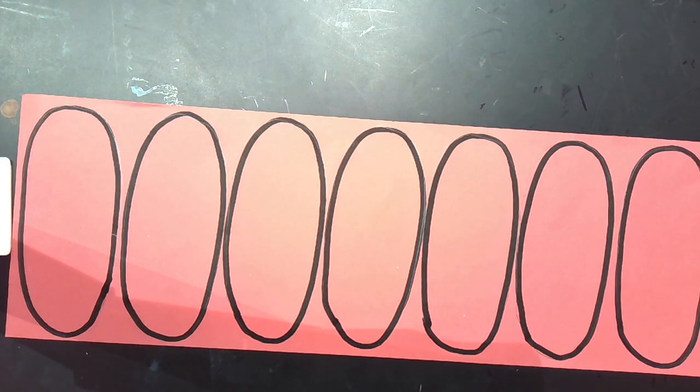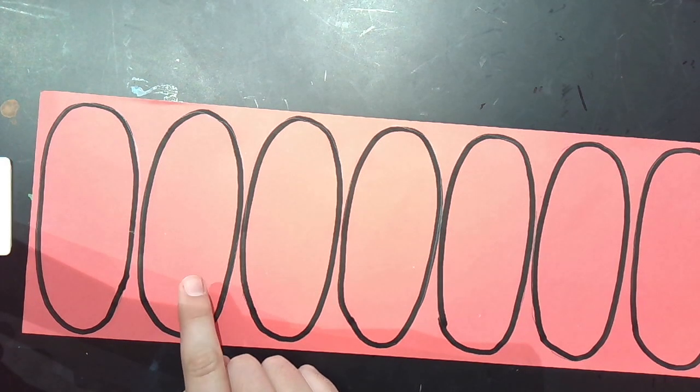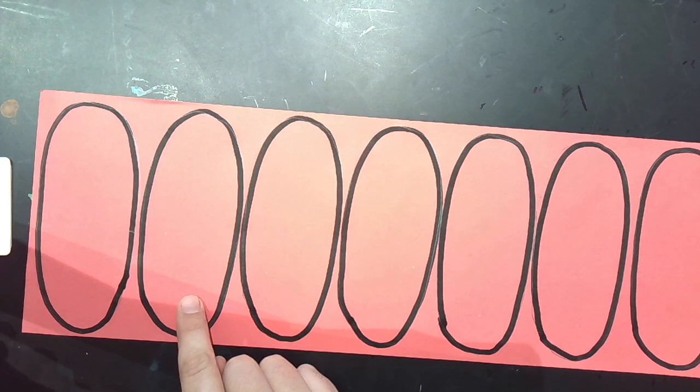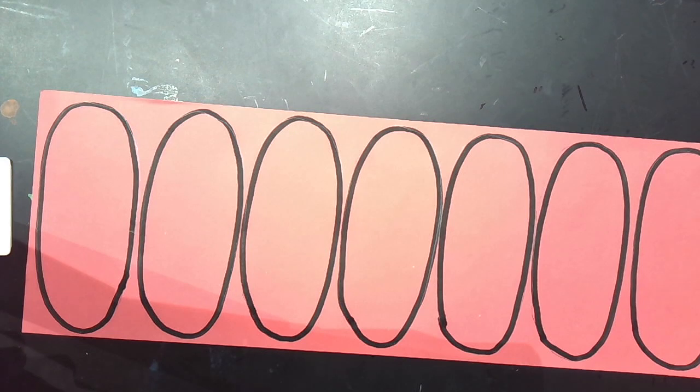So I used my black marker to do my tracing. You may have used a crayon, whatever works. And now what you're going to do is you're going to find a crayon that is a darker color than your paper. If you have a darker red, cool. If you don't, you could just use a black.